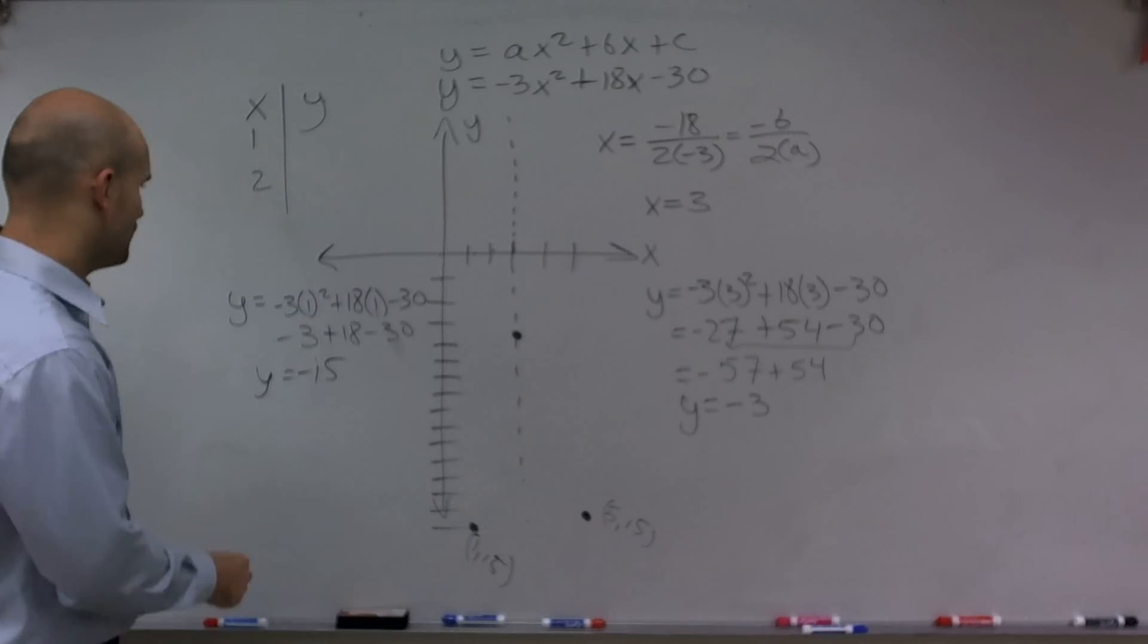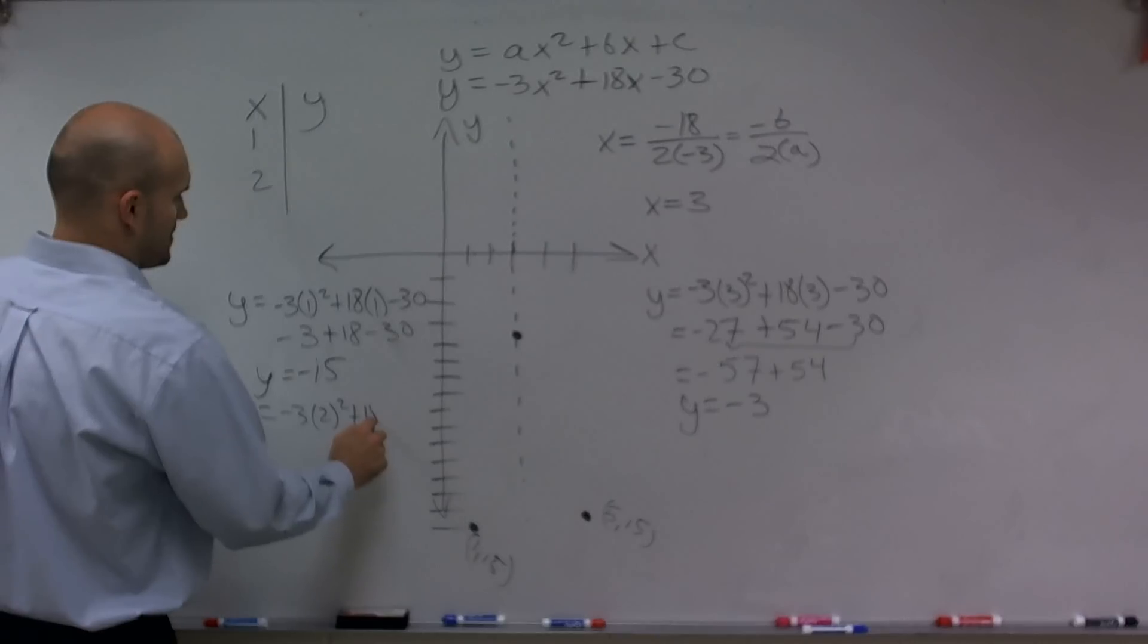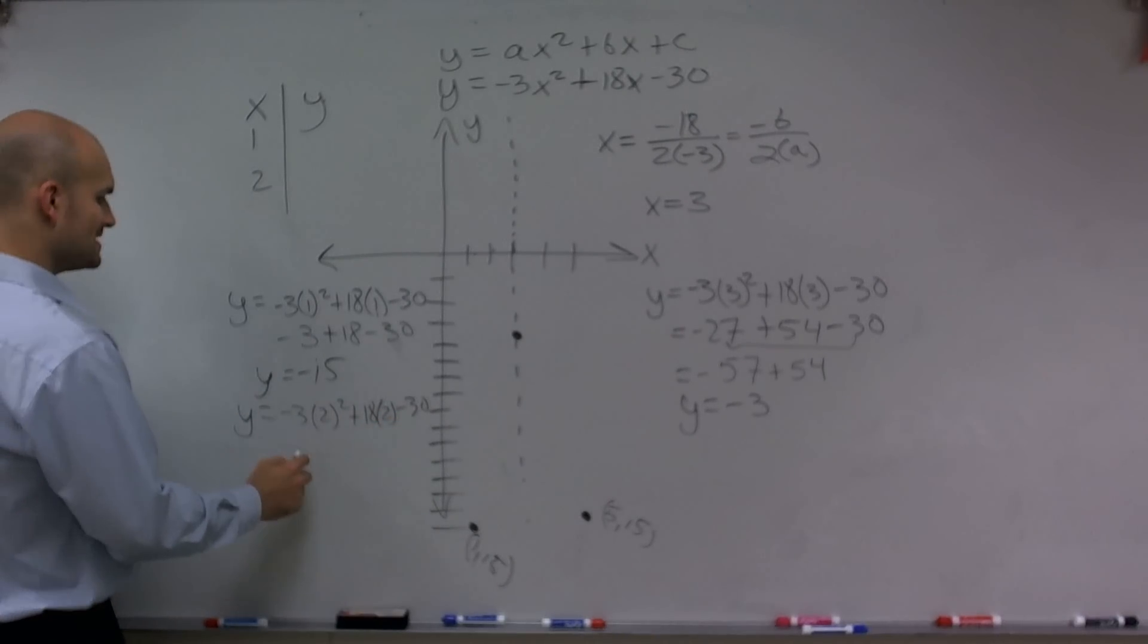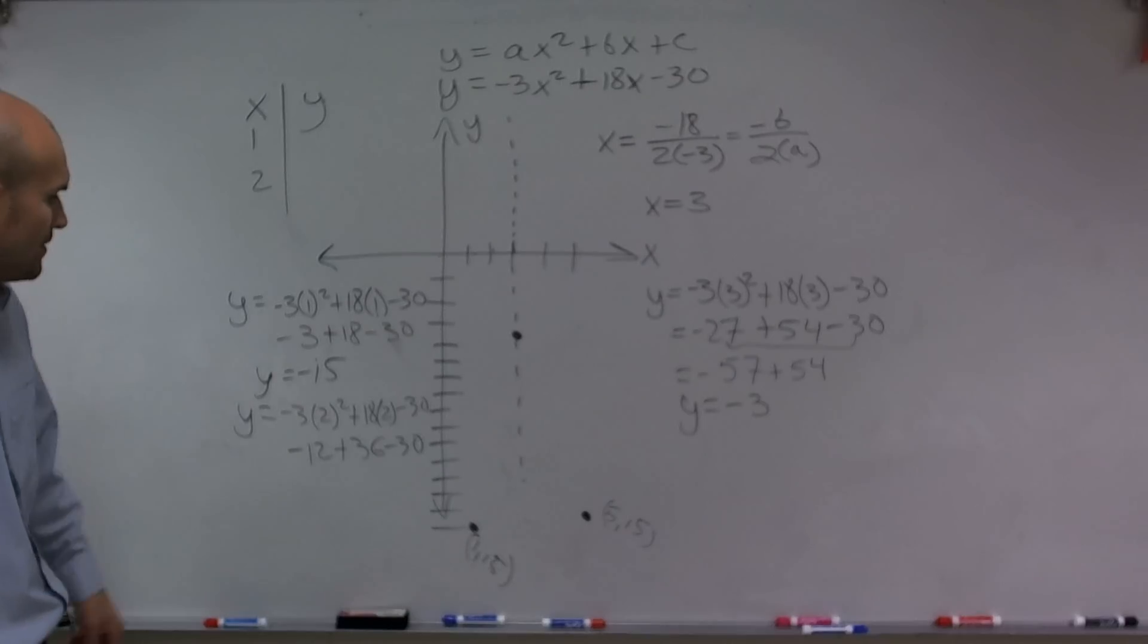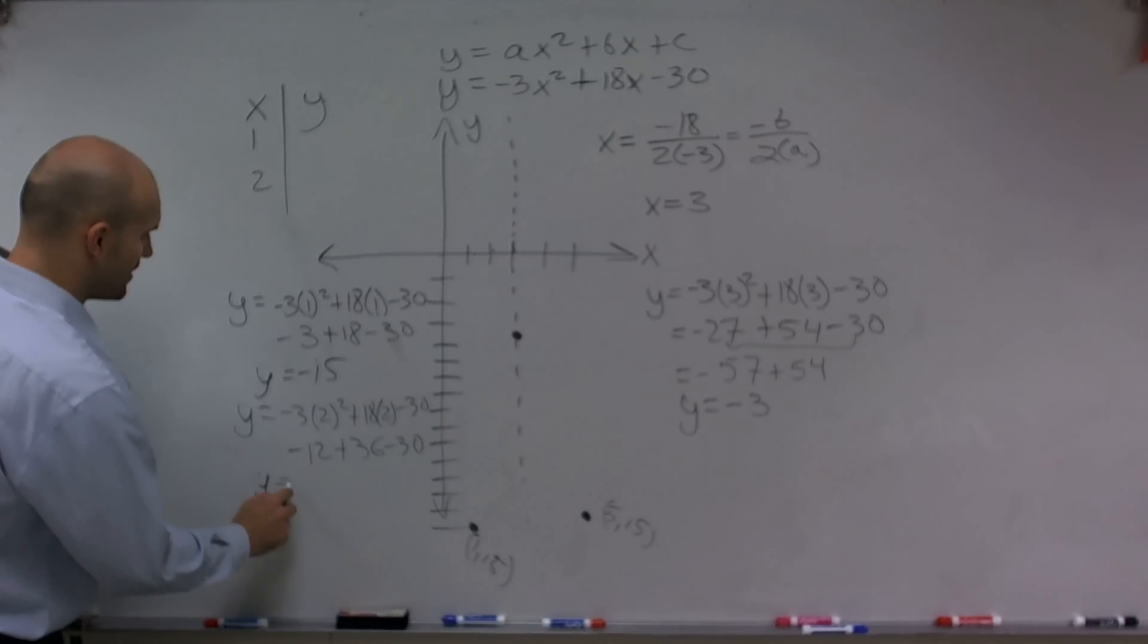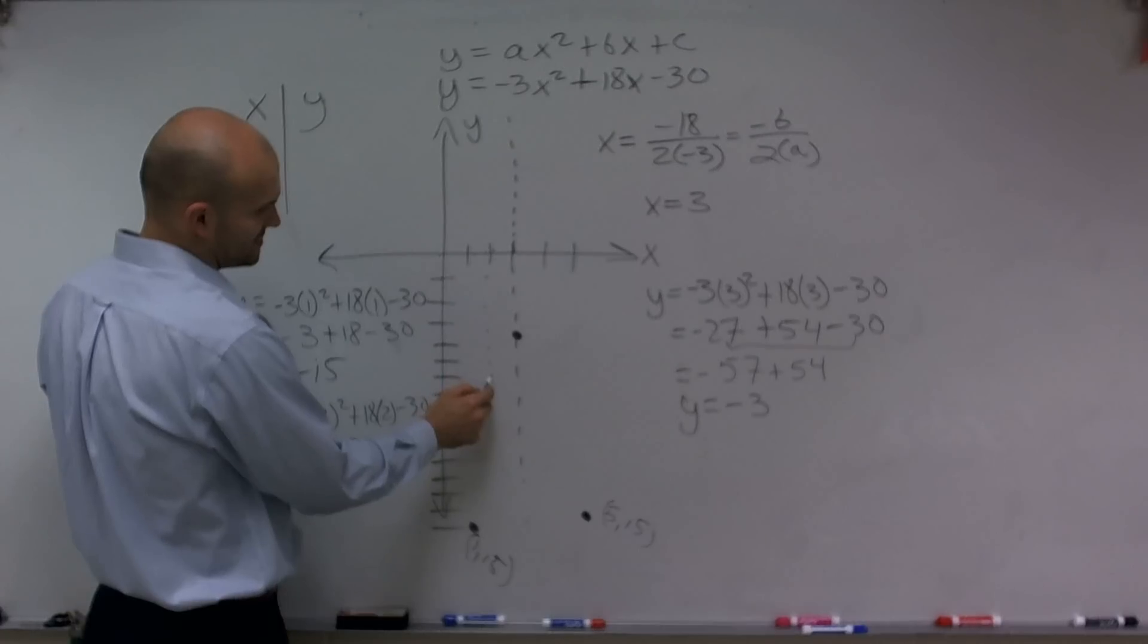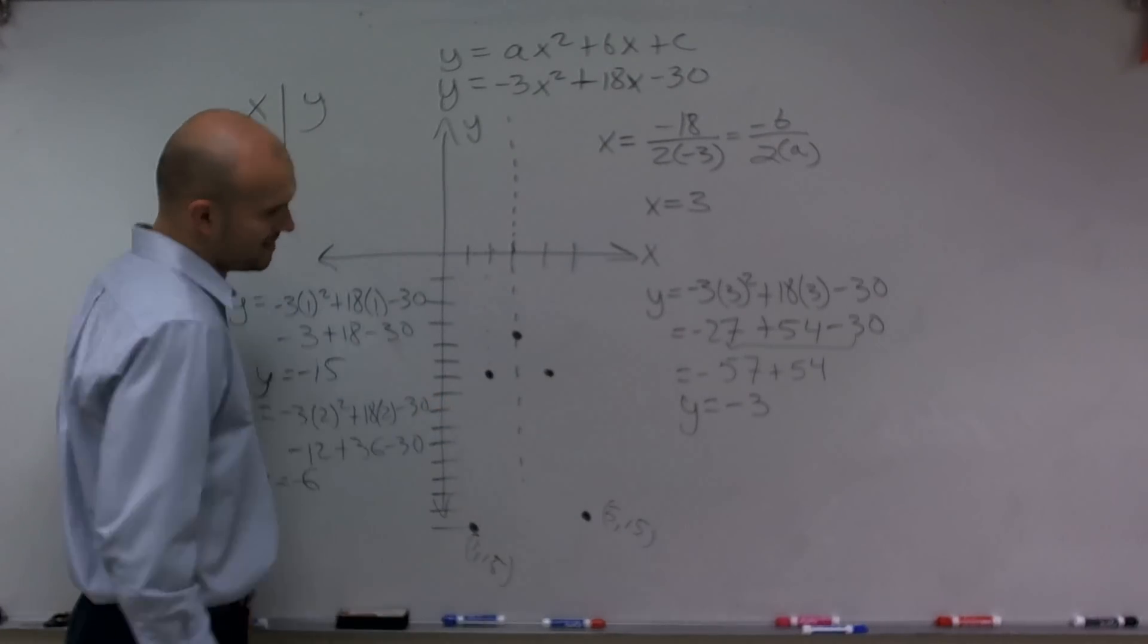Now, let's check x equals 2. So 2 squared is 4, 4 times negative 3 is negative 12 plus 36 minus 30. And therefore, when x equals 2, I get y equals negative 6. So at 2, I go down 6. And remember, that's a distance of 1 over, so I can make this symmetrical.